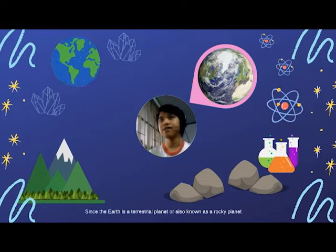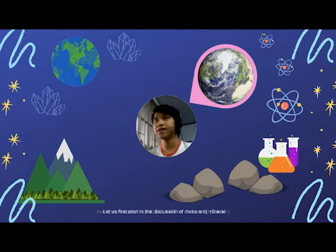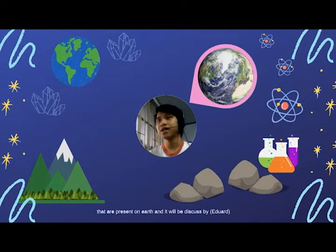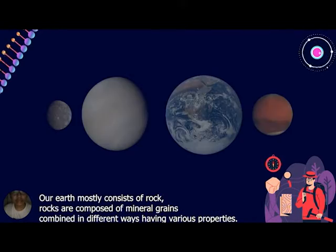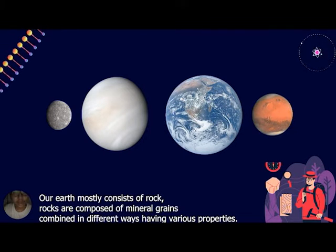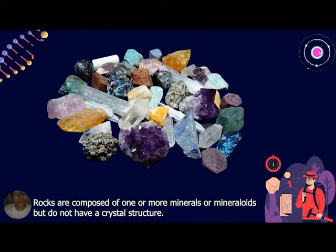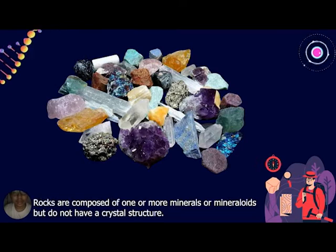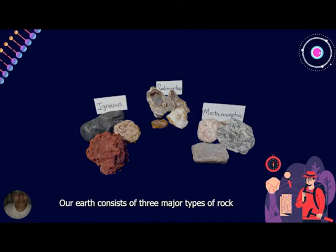Since the Earth is a terrestrial planet, also known as a rocky planet, let us first start the discussion of rocks and minerals present on Earth. Thank you Charles. Now let's talk about rocks. Our Earth mostly consists of rocks. Rocks are composed of mineral grains combined in different ways, having various properties. Rocks are composed of one or more minerals or mineraloids but do not have a crystal structure. Our Earth consists of three major types of rock.